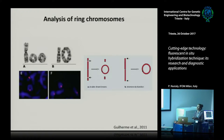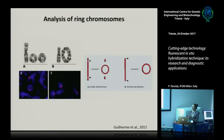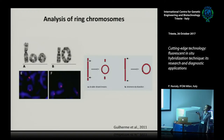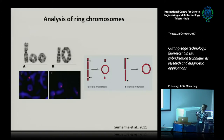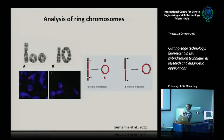FISH can also give us an idea of ring chromosome structure. Ring chromosomes form when there is a double-strand break or telomere dysfunction, and fluorescence in situ hybridization can give us an overview of the structure of these aberrant chromosomes.